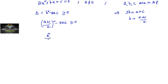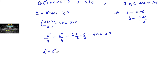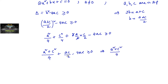Expanding (A plus C)² over 4 gives A²/4 plus C²/4 plus AC/2. So we have A²/4 plus C²/4 plus AC/2 minus 4AC is greater than or equal to 0. Simplifying the AC terms: AC/2 minus 4AC gives minus 7AC/2, so we have A² plus C² minus 14AC all over 4 is greater than or equal to 0.